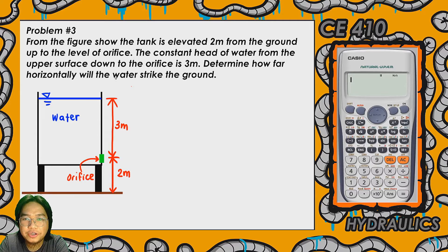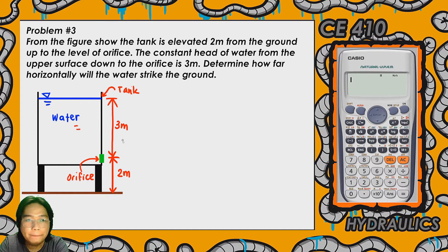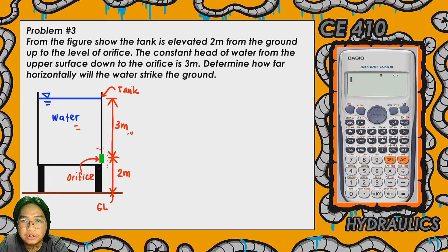Determine how far horizontally will the water strike the ground. Looking at the figure, we have a tank filled with water. The tank is open, meaning there is no input gauge pressure inside the tank and the water surface is exposed to the atmosphere. There is an orifice on the bottom part of the tank where water is being discharged, and the level of the orifice is 2 meters above the ground level — let's denote that as GL. The constant head of water is 3 meters from the orifice up to the water surface.